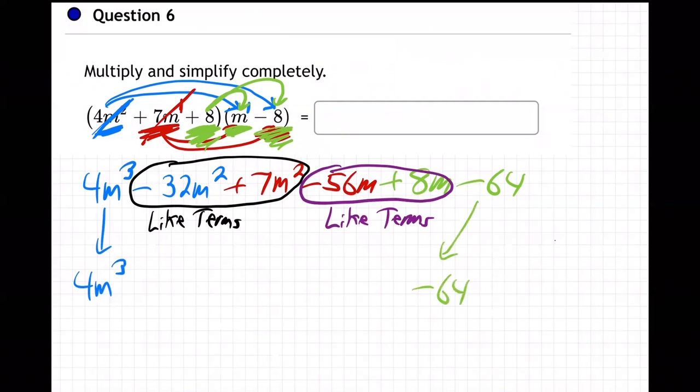Okay, but then right here, these guys will combine to be, just use your calculator, minus 32 plus 7. What is that? Minus 25m squared. And then these two, again, use your calculator, minus 56 plus 8 will be minus 48m. And now we're done.